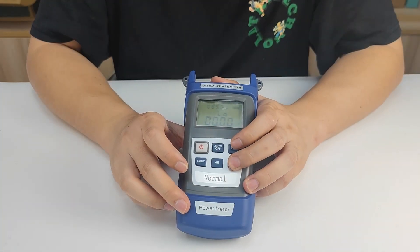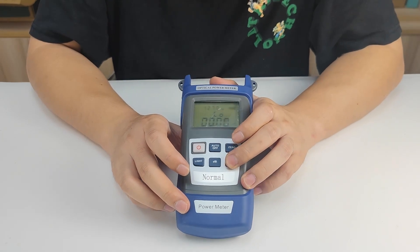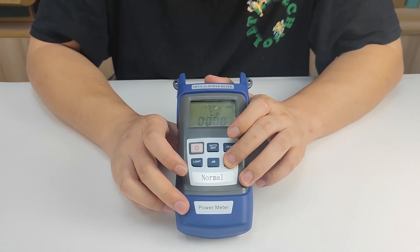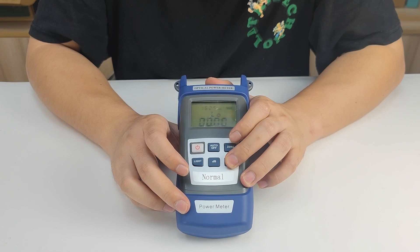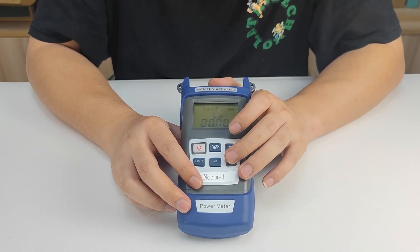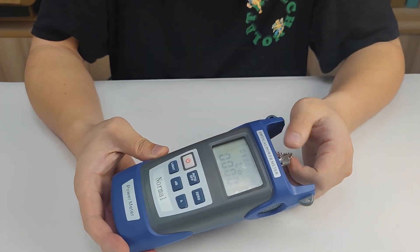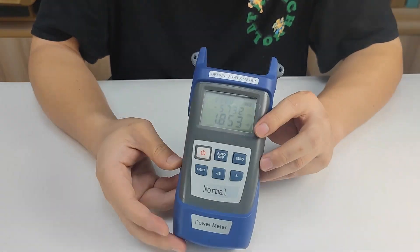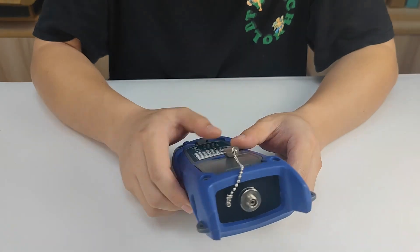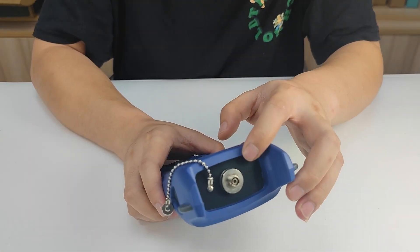Optical power meter with line-adjustable wave lenses, commonly used in circuit diagnosis work. The interface on the top of the machine can be connected to the interface of SC, FC, and ST.